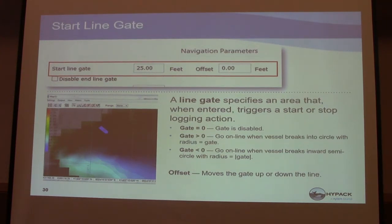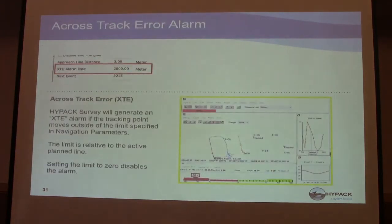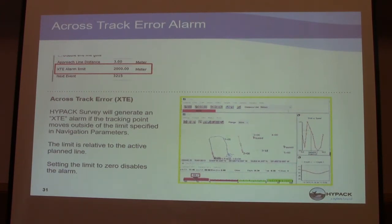A start line gate with a 25-foot radius from the start of the line will start and stop logging. A cross-track error alarm — HiPAC will generate an XTE alarm if the tracking point moves outside of the limit specified in navigation parameters, relative to the active plan line. Setting the limit to zero disables the alarm.